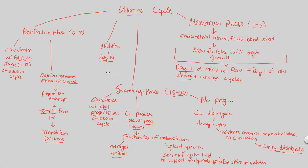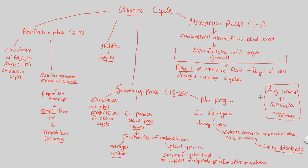Overall, what you need to understand about the uterine cycle is that, though it's complex, it's very important for making sure there is enough preparation happening for a possible pregnancy. The average woman will undergo about 500 uterine cycles, and therefore 500 ovarian cycles, in their lifetime — equating to about 38 years of their life devoted to making and doing these cycles over and over again in hopes of a possible pregnancy.